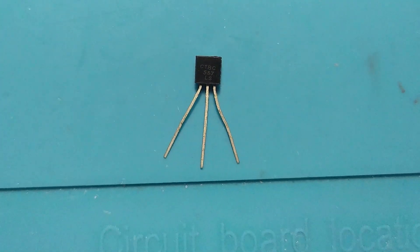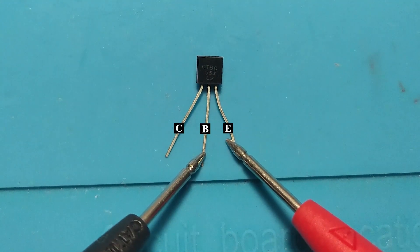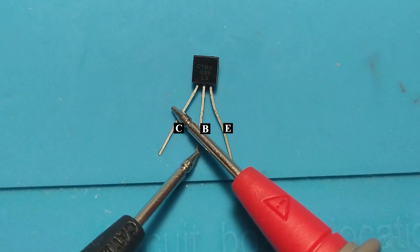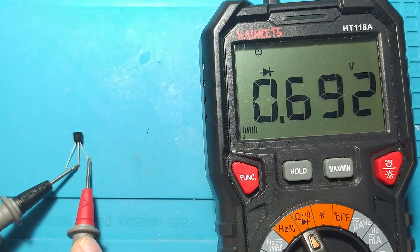Let's also test the BC557 transistor. With the black probe on the base and the red probe on the emitter or collector, should have a voltage drop of about 600 to 700 millivolts.